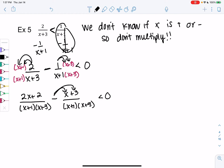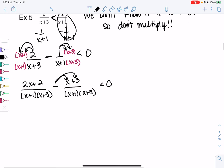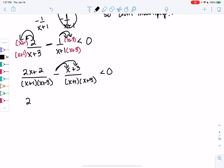So we're going to combine them. My first fraction is 2x plus 2. My second one, because of the subtraction, will be minus x minus 3. And then they have a common denominator of x plus 1, x plus 3.